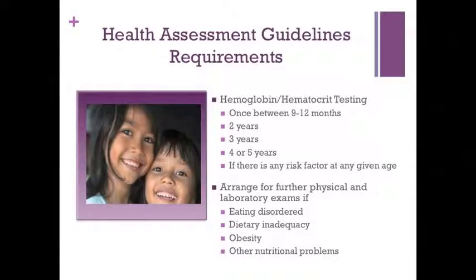CHDP requires hemoglobin or hematocrit testing starting at 9 to 12 months of age, if indicated at 15 and 18 months, always at 2, 3, and 4 or 5 year visits, and as indicated from 6 to 20 years of age. If results come back abnormal, arrange for further physical and laboratory examinations, and screen for eating disorders, dietary inadequacy, obesity, or other nutritional problems. On the PM160, glucose and cholesterol are recorded in the comments or problems section using screening procedure 3, with a documented justification such as BMI above 95th percentile and family history of diabetes. The hemoglobin or hematocrit measurement is recorded in its designated box in the middle of the PM160.